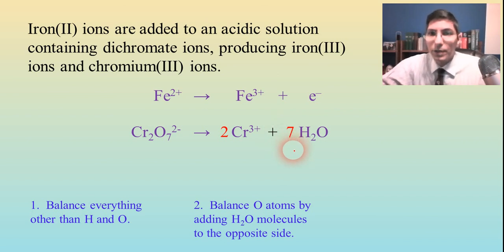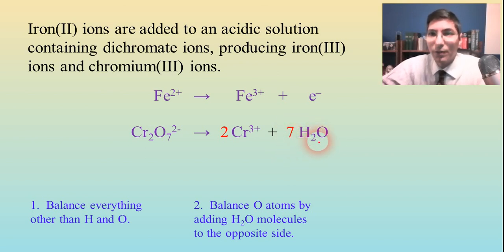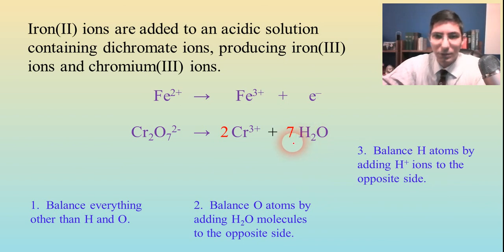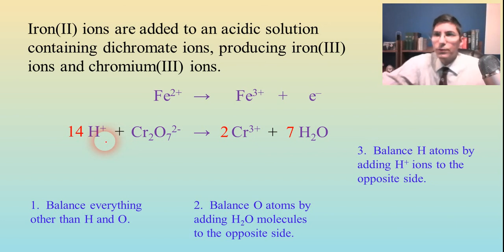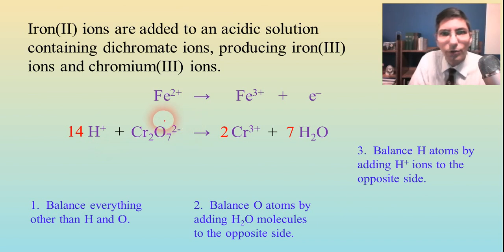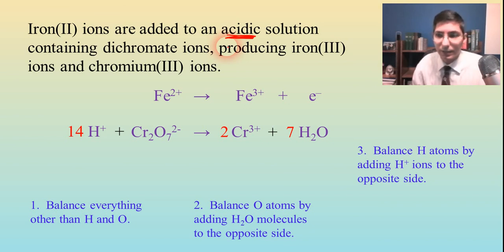I've solved my oxygen problem, but I've just created a new one — a hydrogen problem. I now have 14 hydrogens on the right side. We balance the hydrogen atoms by adding H⁺ ions to the opposite side. So I'm going to add 14 H⁺ to the left side. And I can do that because most of these redox reactions take place in acidic solutions. This problem actually told us that — it says it's an acidic solution. So we're not assuming; it's telling us that H⁺ is there and it's actually doing something.